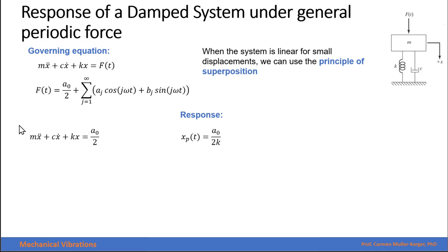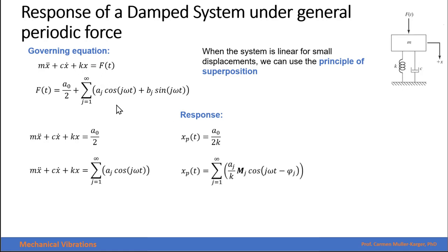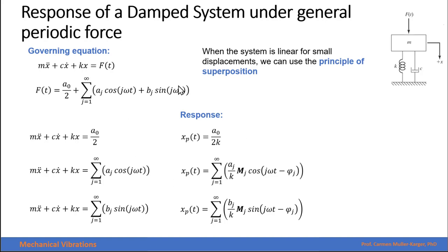The equation of motion is shown here. For the first force, which is a constant, the response is simply a displacement equal to the magnitude of the constant force divided by the spring constant. For the second term, which is harmonic, the response uses the same form — cosine and cosine — and equals the magnitude aⱼ divided by the spring constant times the magnification factor, with the cosine function delayed by a phase angle.